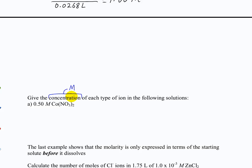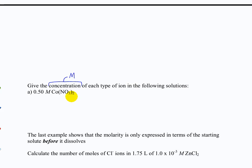So your answers for this question will be in molar. Now, if we know that the concentration of the cobalt nitrate is 0.5 molar, how do we figure out the concentration of each ion? We don't need to convert to mass — everything's in moles, so we can keep it in moles. We don't have a set volume here, we just know the concentration. We need to think about what happens when you dissolve cobalt nitrate in solution.